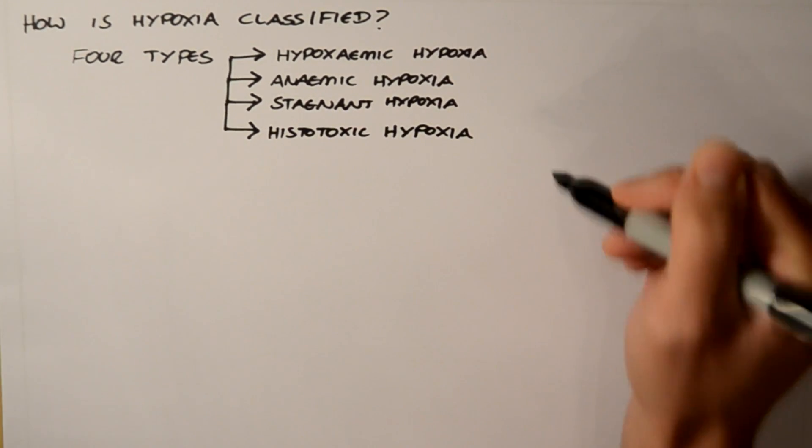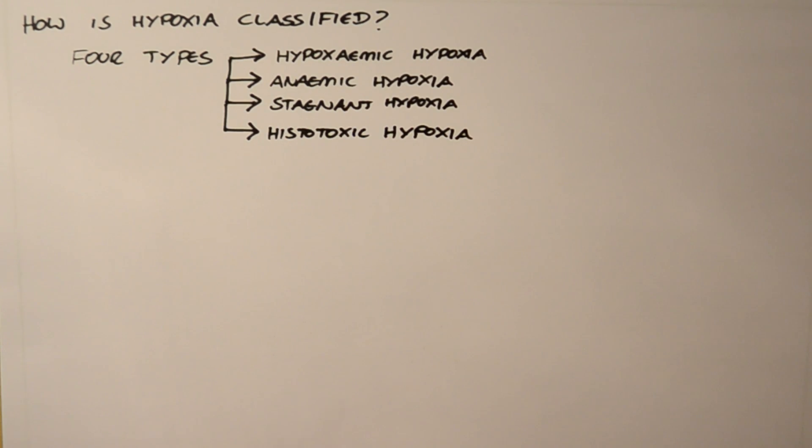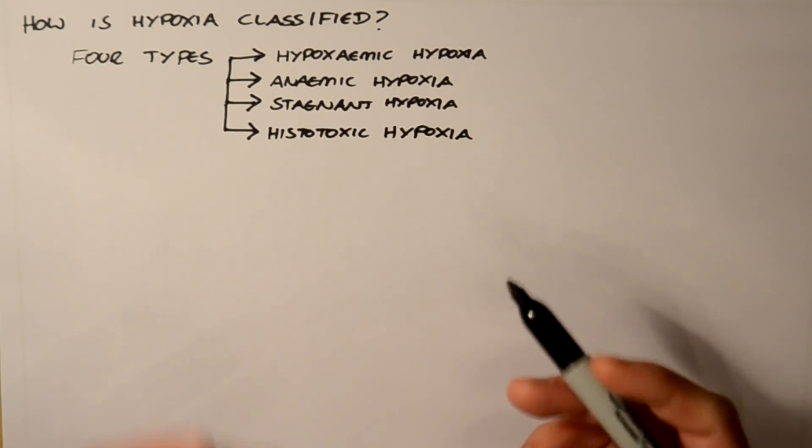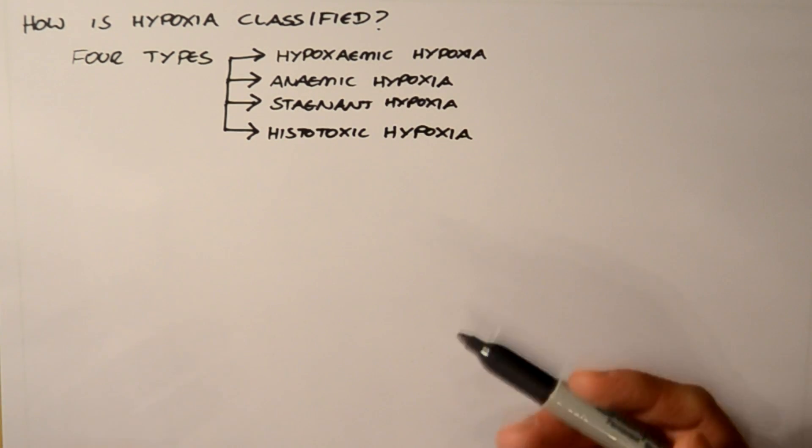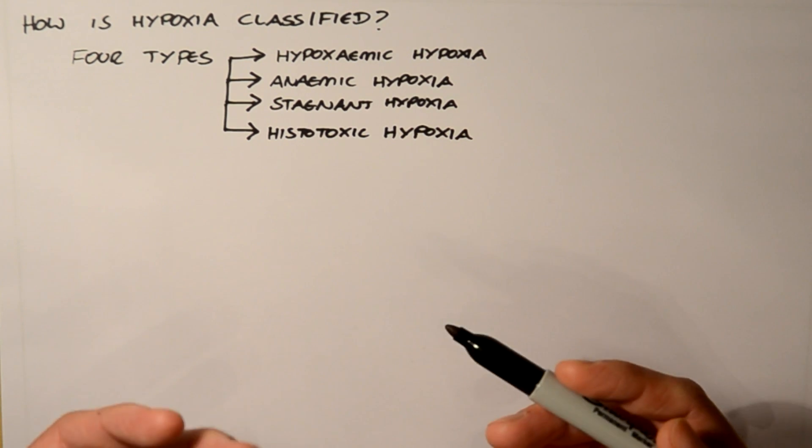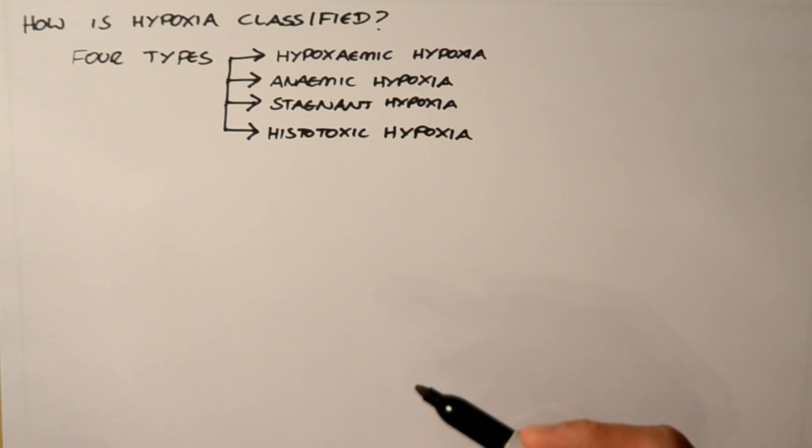Four different types. And why do we actually need to know this? Well, when you see a patient who's hypoxic, you need to work out the cause. If you don't, treating with oxygen might not actually work very effectively, and you might be simply treating the effect rather than the cause.